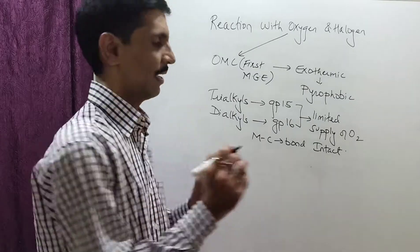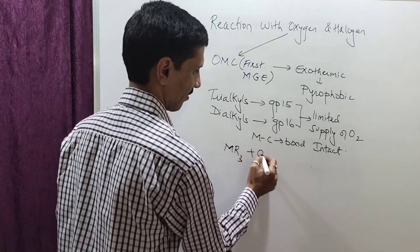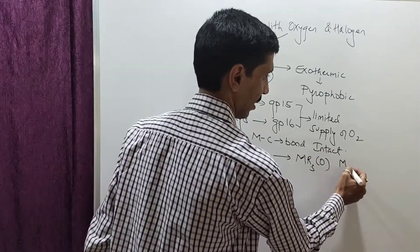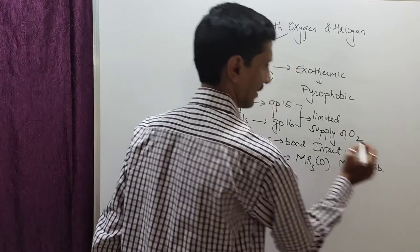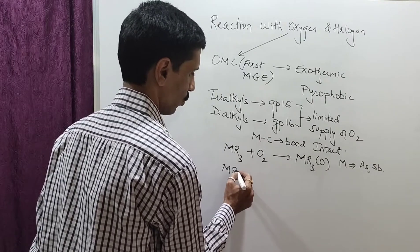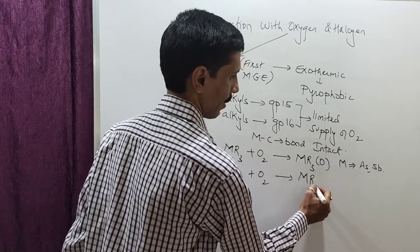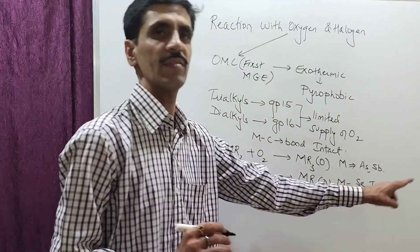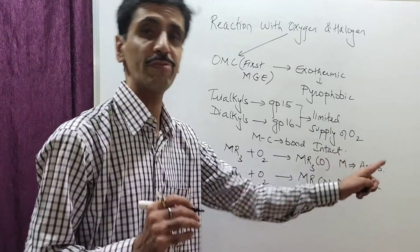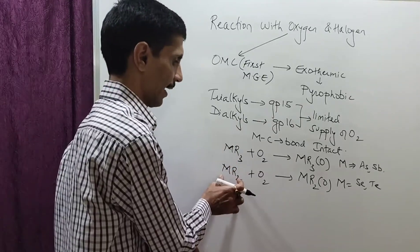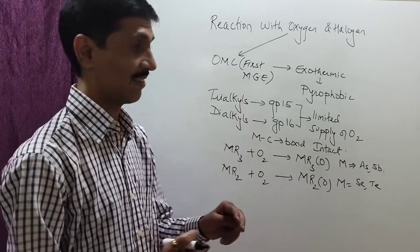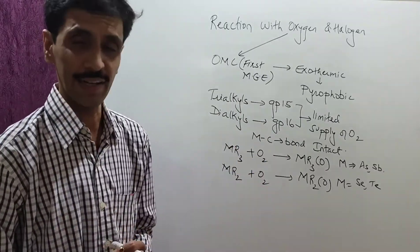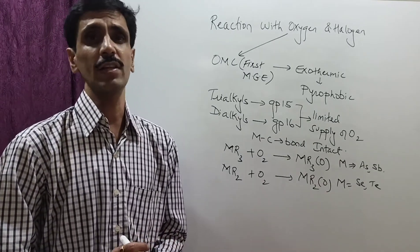I will give you some examples. When MR3 + O2 gives you MR3O, where M stands for arsenic and antimony — these are group 15 elements. Next, MR2 + O2 gives MR2O, where M is selenium and tellurium — these are group 16 elements. So group 15 uses trialkyl and group 16 uses dialkyl, because of the differences in valency. This reaction takes place in limited supply of oxygen, because there is a degree of stability being achieved. This is the reaction of oxygen with organometallic compounds.